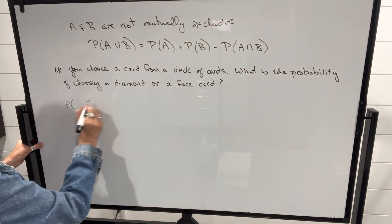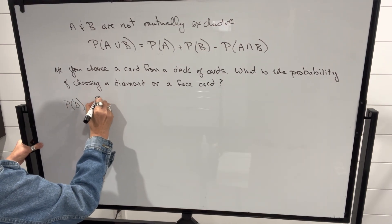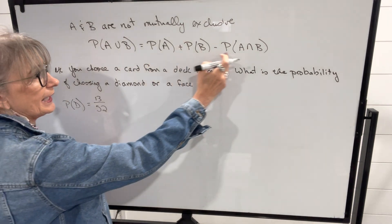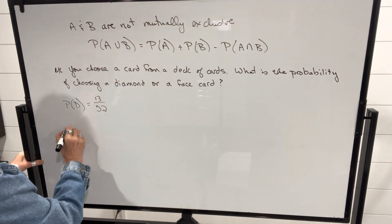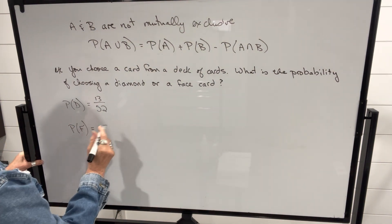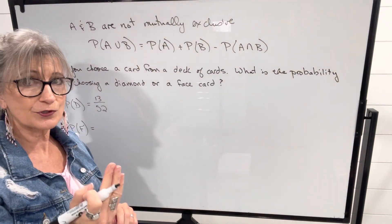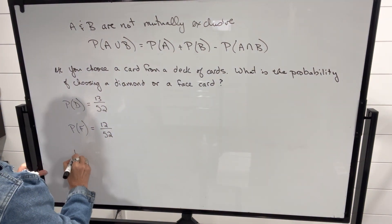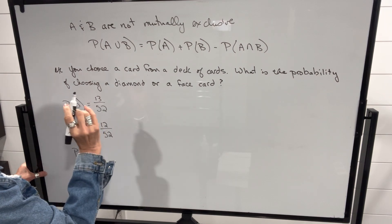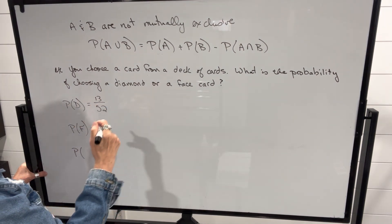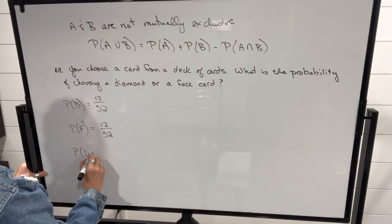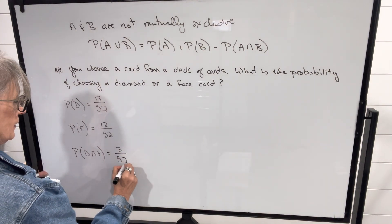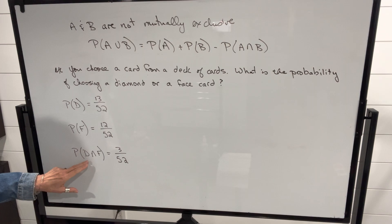The probability of choosing a diamond: there are 13 diamonds in a deck, so it's 13/52. I'll leave it unreduced because I want a common denominator when I add these probabilities. The probability of choosing a face card: a face card is Jack, Queen, and King, and there are four suits, so three times four gives 12 face cards — that's 12/52. And the probability of choosing a diamond that's also a face card: there's a Jack, Queen, and King of diamonds, so there are three of them — that's 3/52.